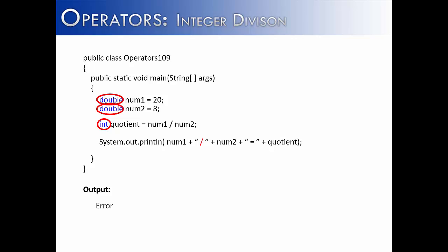This would give us a precision error. Because you're taking two larger values, which are doubles, and trying to store them into an int, which is a smaller value, and it would give you a precision error.